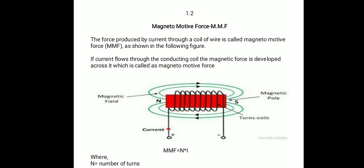In today's lecture we are going to see magnetomotive force or MMF. The force produced by a current through a coil of wire is called magnetomotive force. As shown in the figure, if a current flows through the coil, the magnetic flux is generated around that coil. That magnetic force is called the magnetomotive force, and that setup is called the electromagnet.